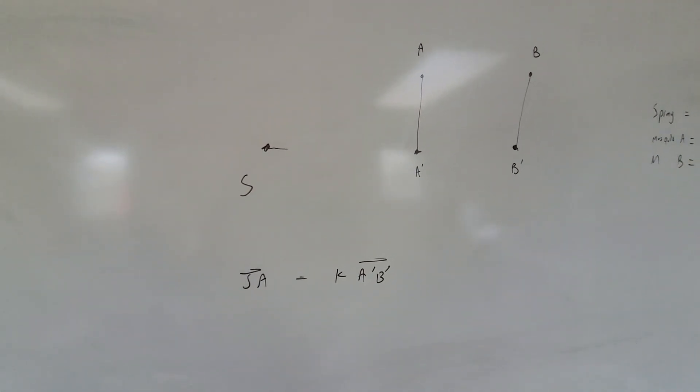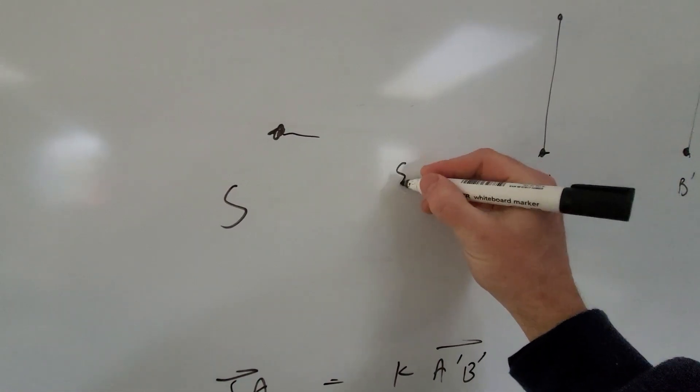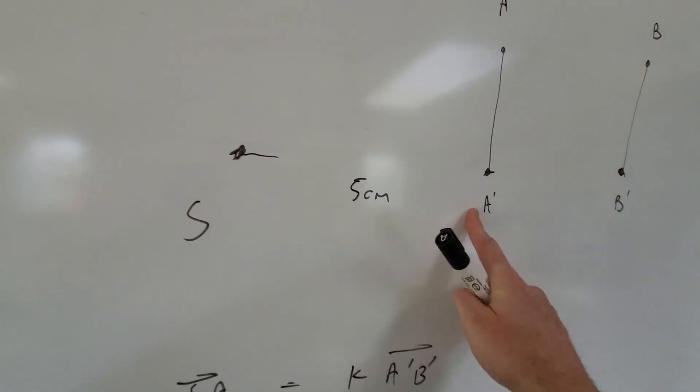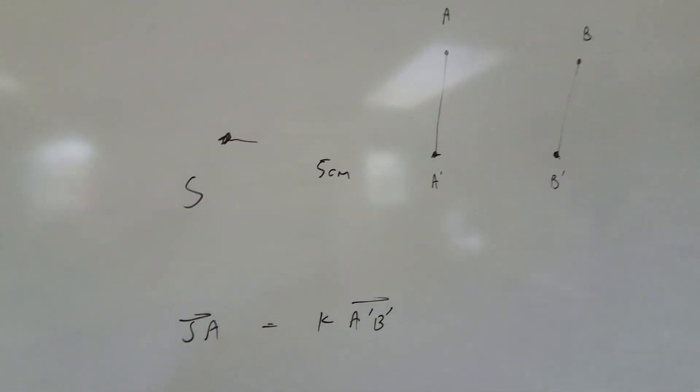We can also dictate this distance between the spray and A'. So I'm going to define that straight away as, let's just go for five centimeters or something like that. I'm going to get the spray nice and close to mosquito A's prime position.